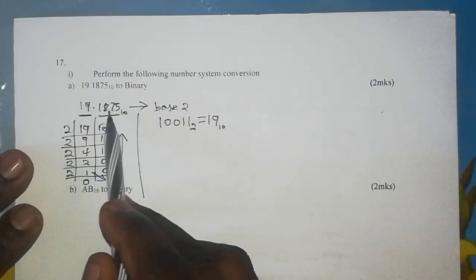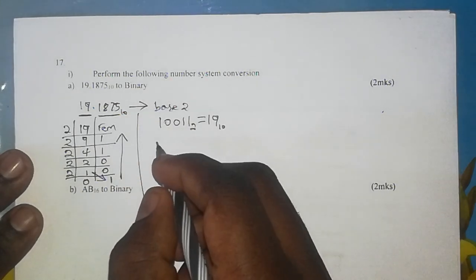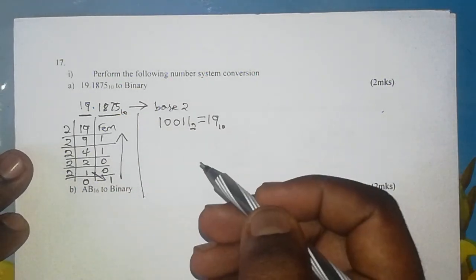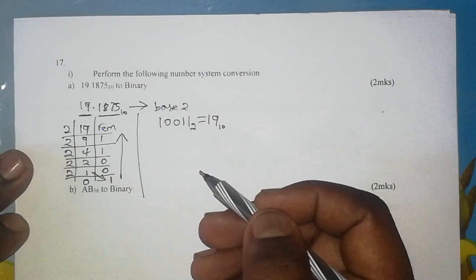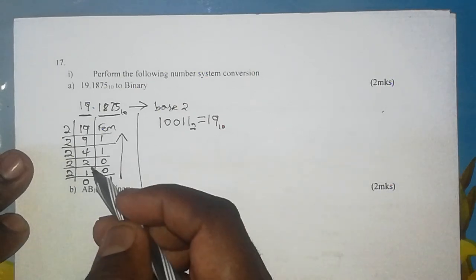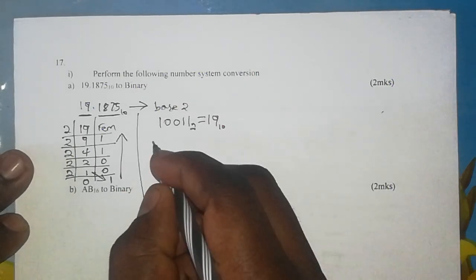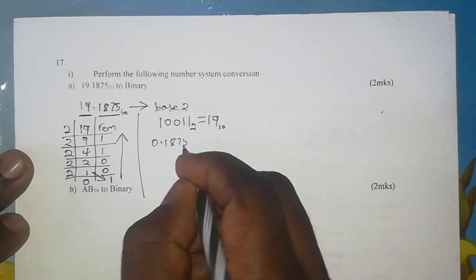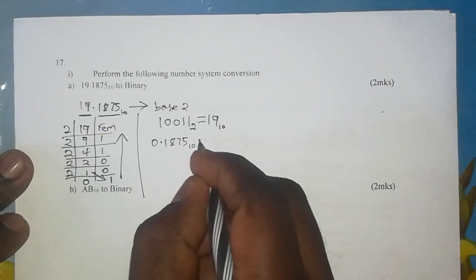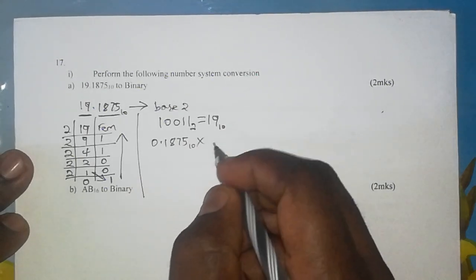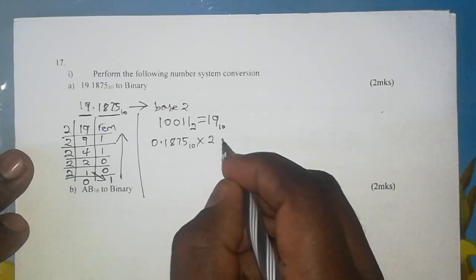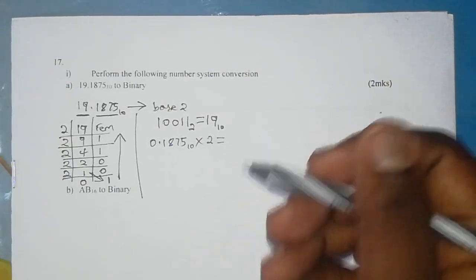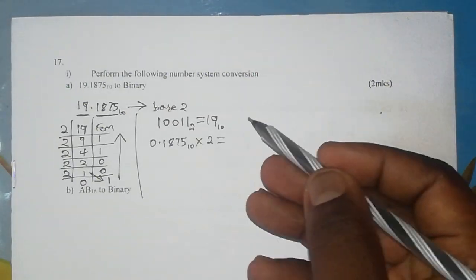Now we proceed to work out the fraction part. The fraction part is worked out by multiplication as opposed to division. We take 0.1875 and multiply it repeatedly by 2, taking note of the whole number part of the products.